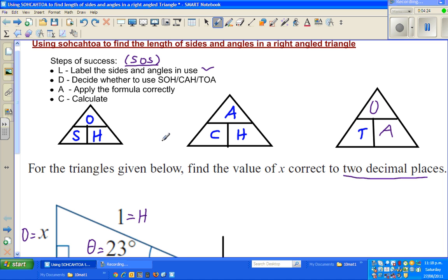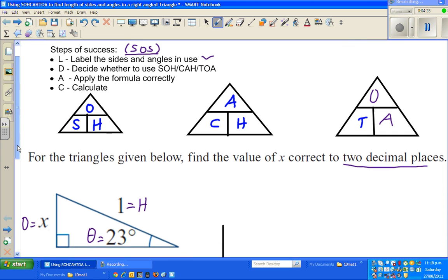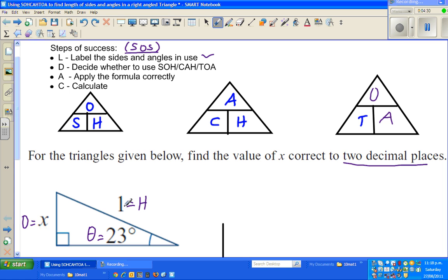I will label the sides and angles. The second is to decide the formula. You got O and H, so we have to use SOH. SOH is what I am going to use. That's done. Now you apply the formula.